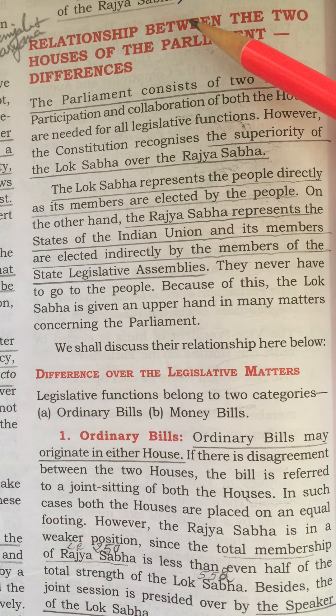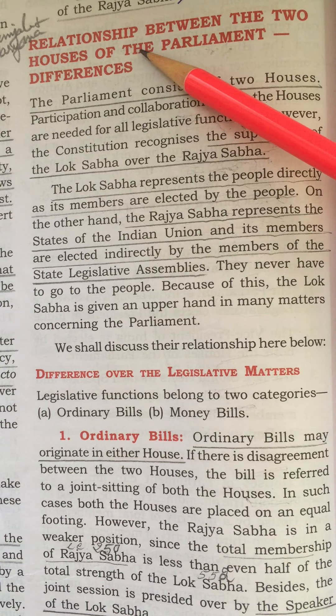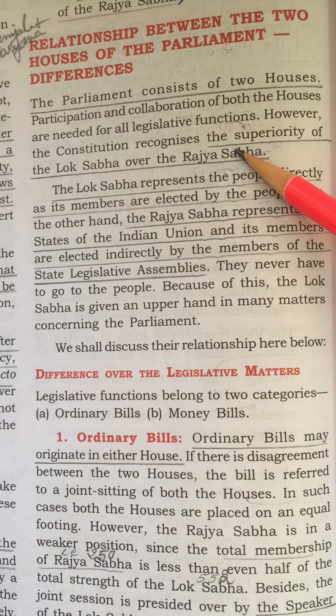In today's video we shall study the relationship between the two houses of the Parliament, that is Lok Sabha and Rajya Sabha, and the differences. The Parliament consists of two houses, and participation and collaboration of both houses are needed for all legislative functions. However, the Constitution recognizes the superiority of Lok Sabha over the Rajya Sabha.